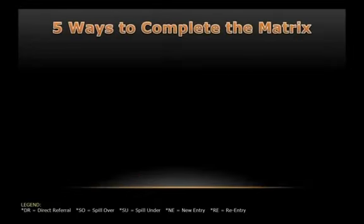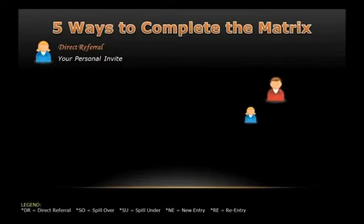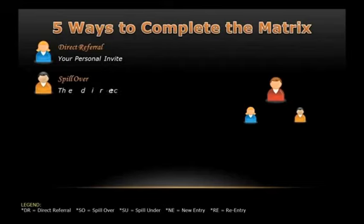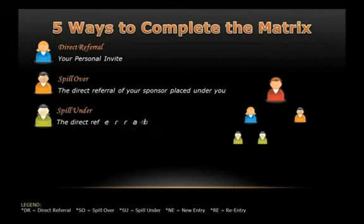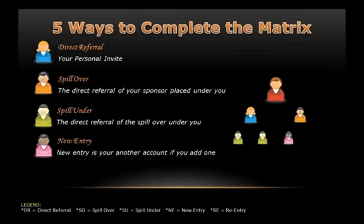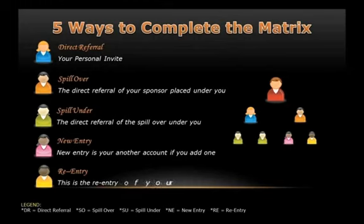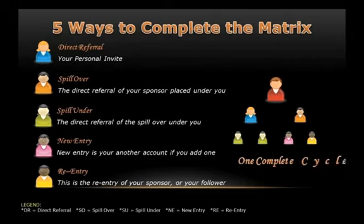There are 5 ways to complete the matrix. First is direct referrals, or your personal invites. Second is spillover, or the direct referral of your sponsor placed under you. Third is spill under, or the direct referral of the spillover positioned under you. Fourth is new entry, or another account if you add one. And lastly is re-entry — re-entries may come from your sponsor or your followers in TNMM. There are so many ways to fill in your matrix, not just by direct referrals.